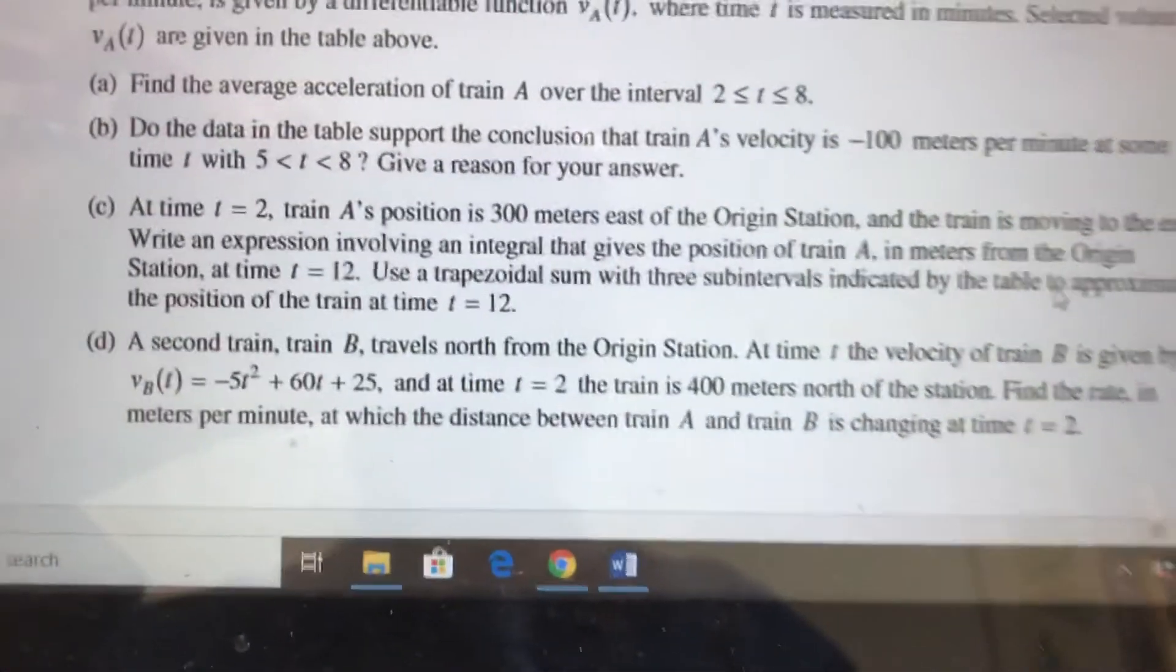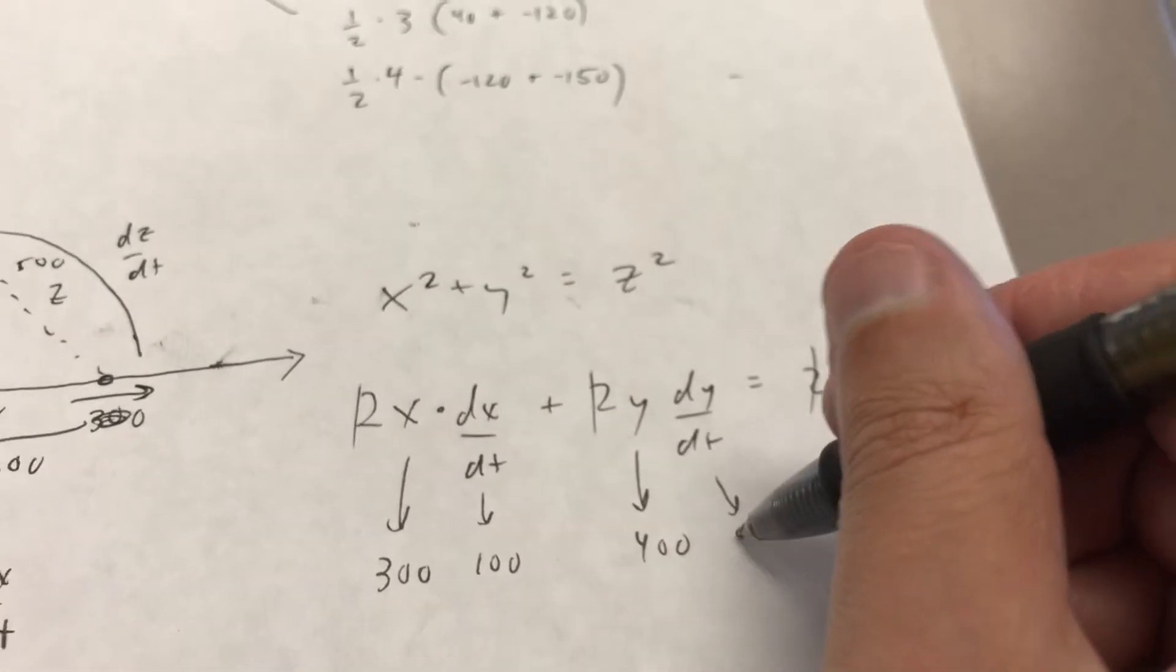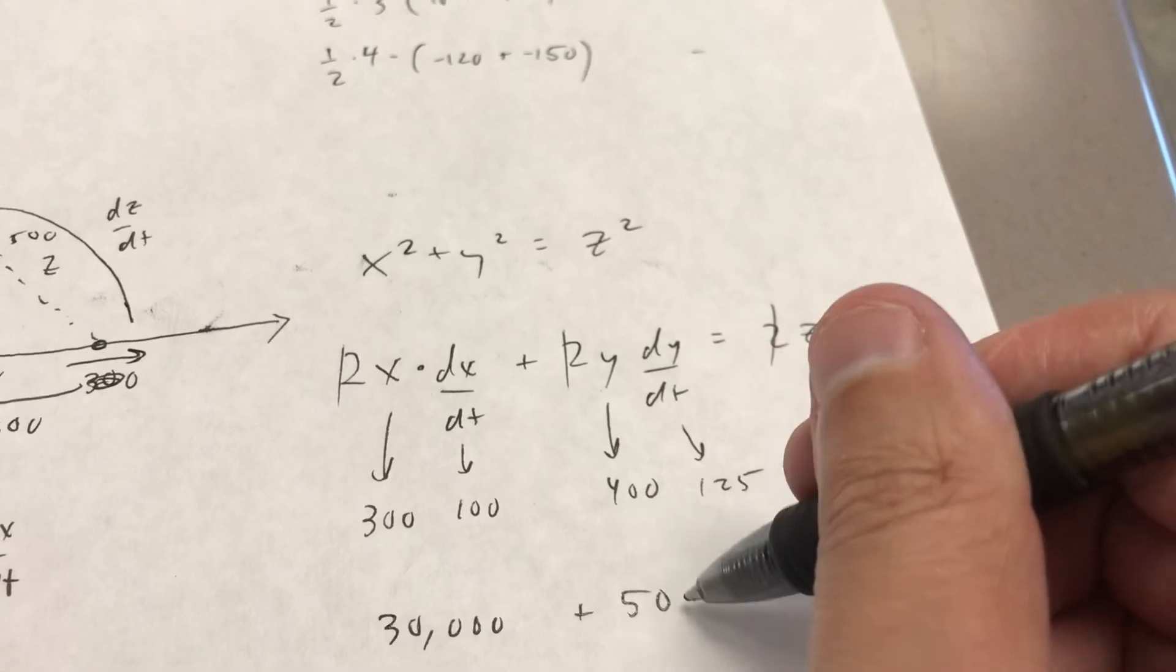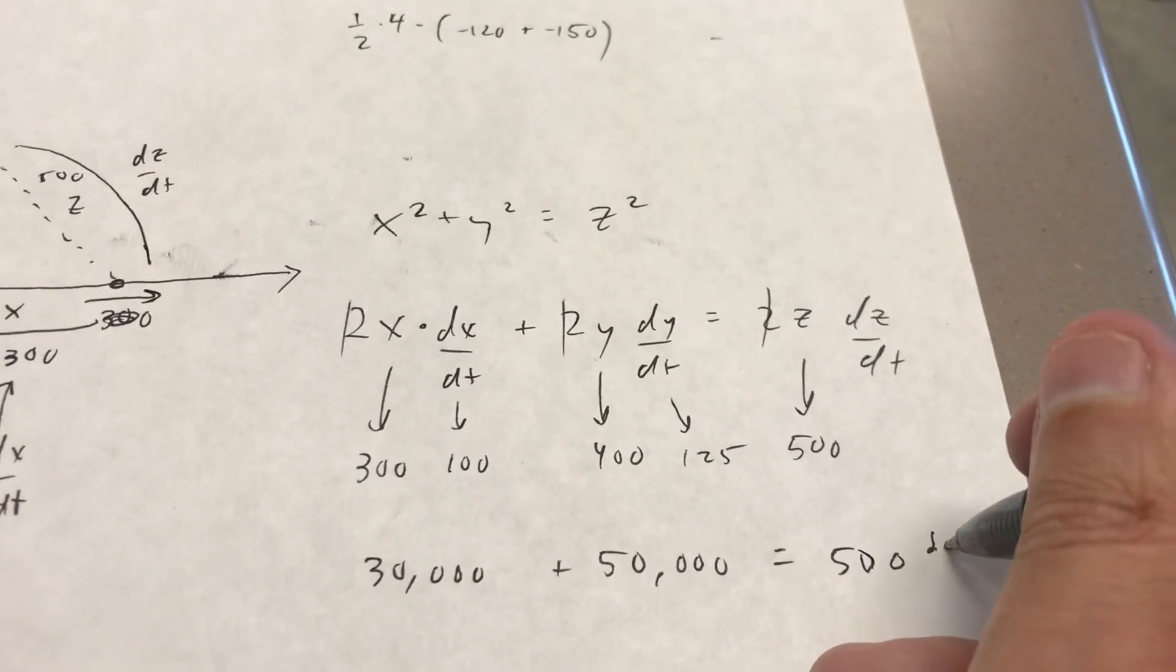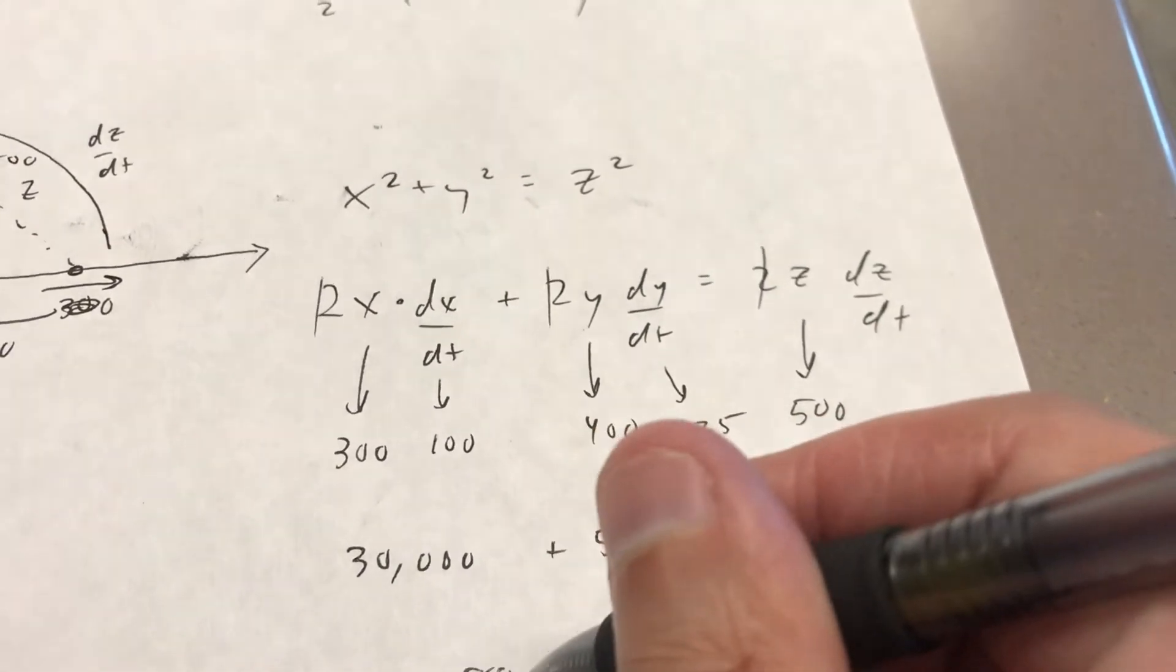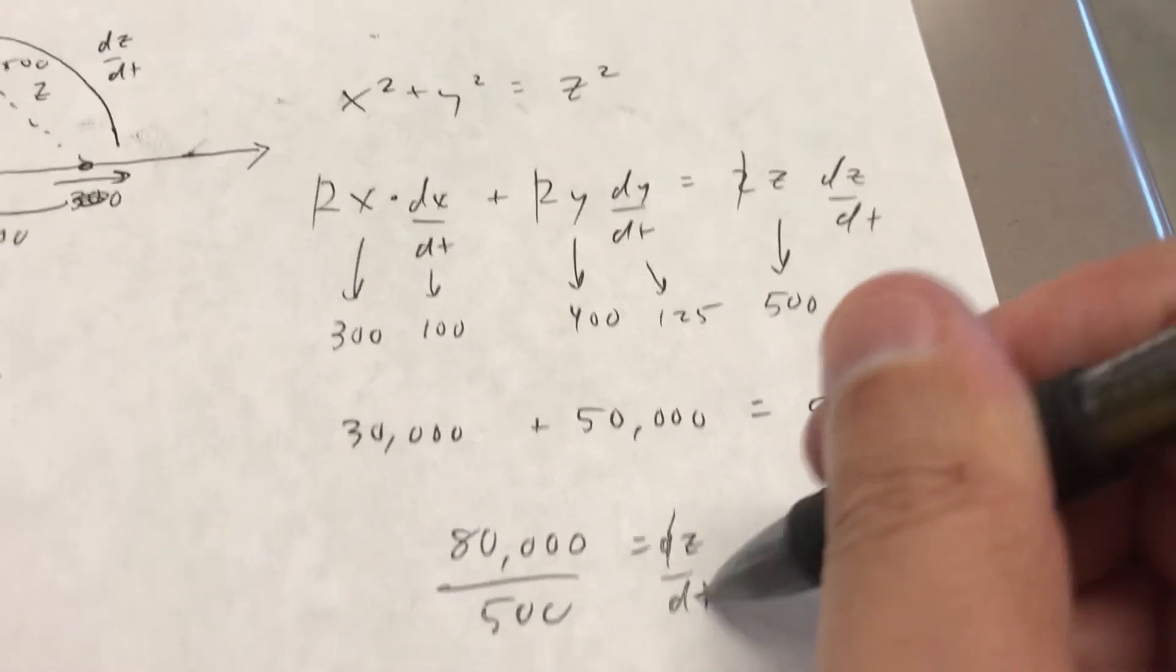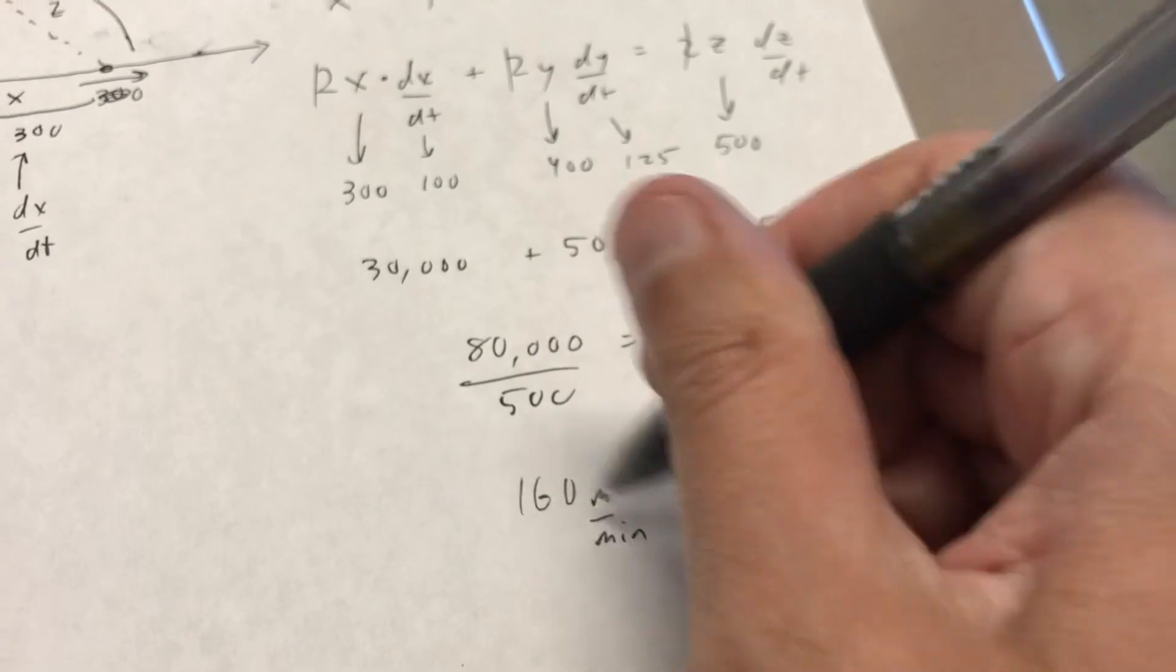And dy/dt here, you will have to go back to the equation. I think if you sub in 2 to the velocity equation here, I think you're going to end up with 125, if I remember correctly. 125 is my final answer. And so you're going to get 30,000 plus 50,000 is equal to 500 dz/dt. You should be able to divide 80,000 by 500, and that would give you dz/dt. That's the rate of change of side z in your triangle. And I think that's going to be 160. Go back and look at the units - I think it's meters per minute. And that ends up being that final rate of change.